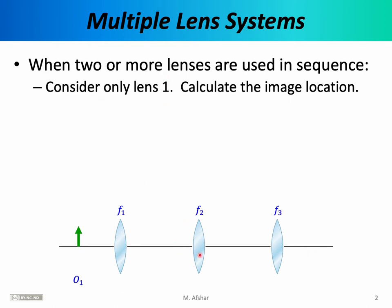To answer that, we start with lens one and completely ignore the other two lenses. We calculate the image location for lens one using the appropriate equations — the thin lens equation if it's a thin lens, or the mirror equation if it's a mirror. The first element gives us an image, labeled I₁. We then treat this image as the object for element two, labeled O₂.